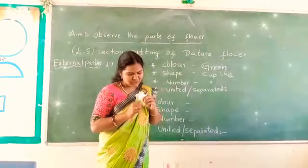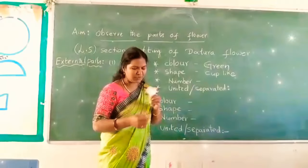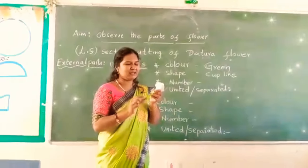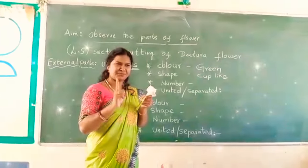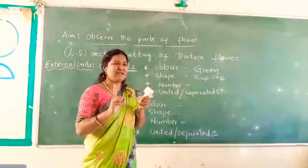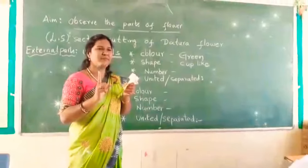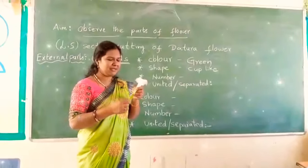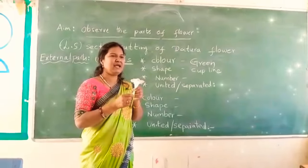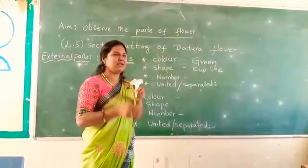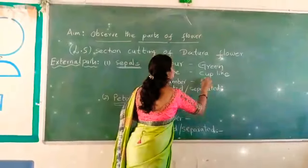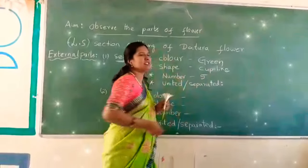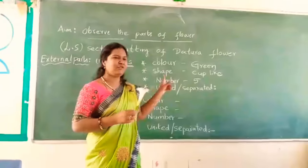One, two, three, four, five. Here it is looking like only one sepal, but here they are separated. So here, the number of sepals is five.